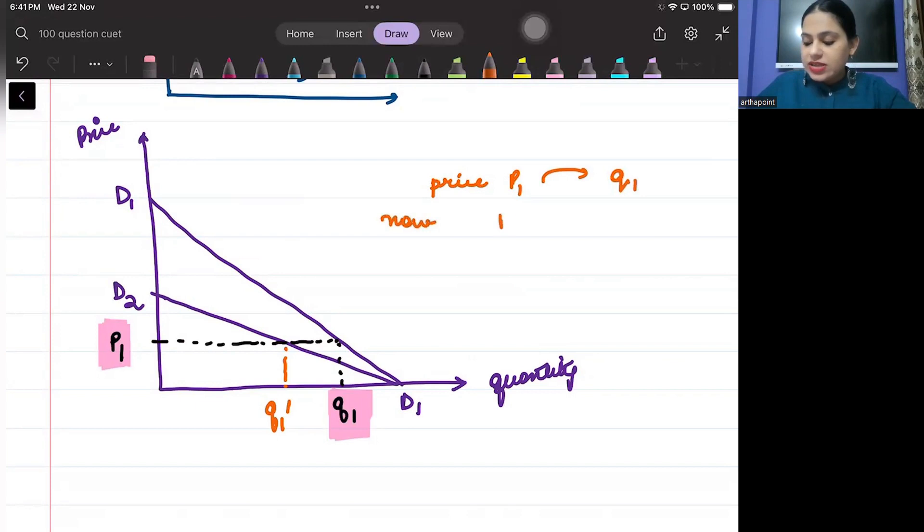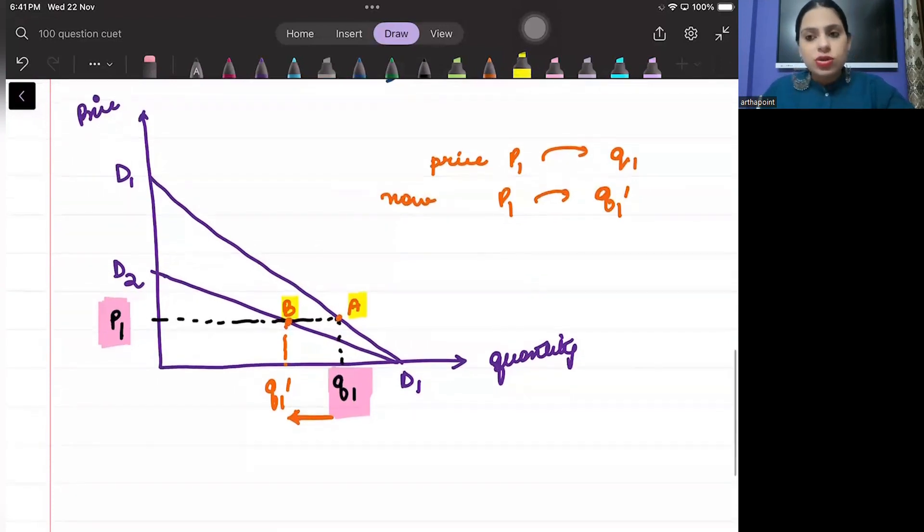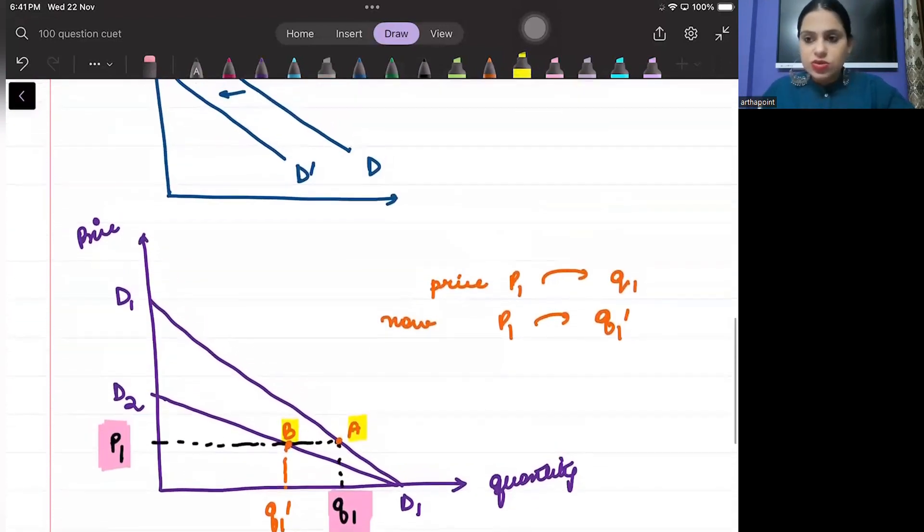Now, when price is P1, quantity has reduced to Q1-. So, you are going from point A to point B.